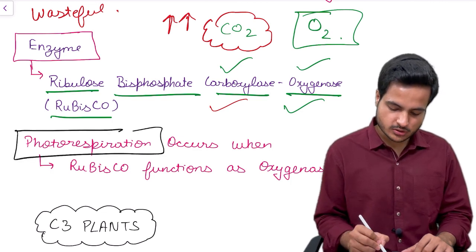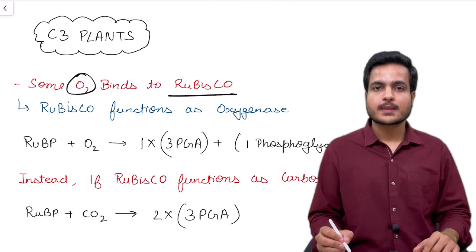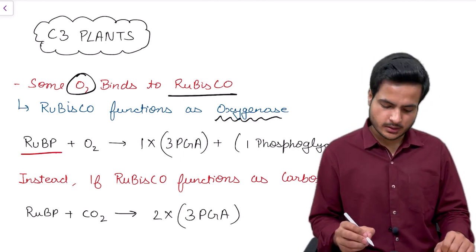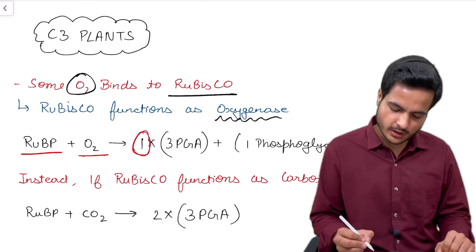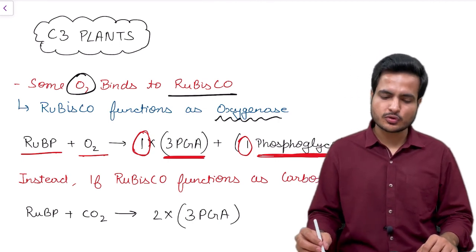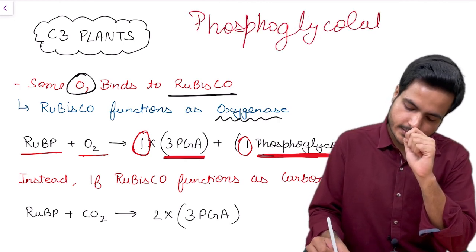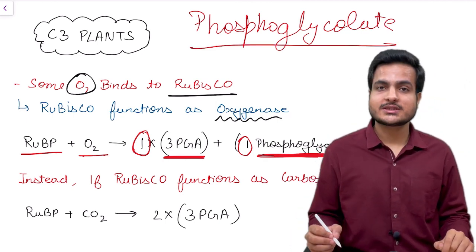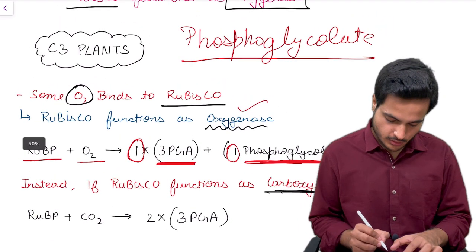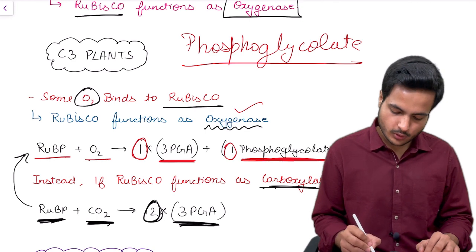In photorespiration, RuBisCO functions like an oxygenase. In C3 plants, oxygen binds to RuBisCO and the enzyme behaves like an oxygenase. Ribulose bisphosphate, the 5-carbon keto sugar, binds with oxygen and leads to formation of only one molecule of 3-phosphoglyceric acid along with a molecule of phosphoglycolate. Whenever you hear the term photorespiration, one compound should come to mind: phosphoglycolate. In contrast, when RuBP combines with CO2, two molecules of 3-PGA are formed.